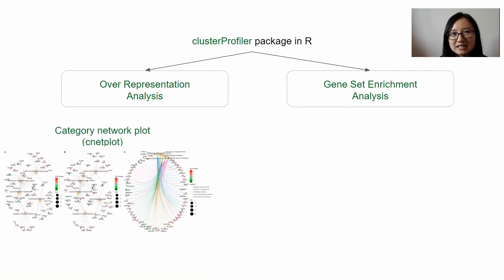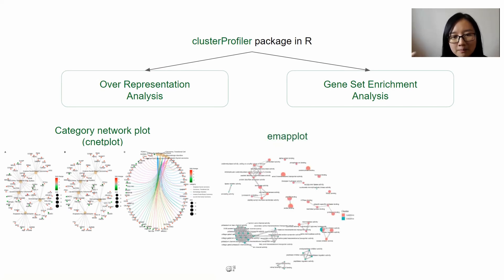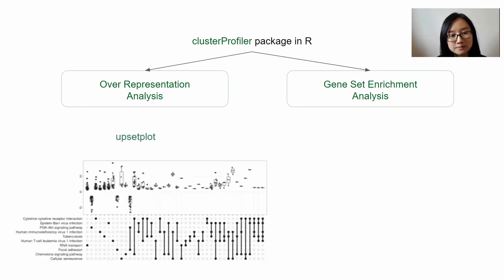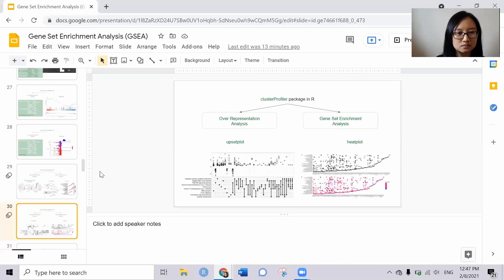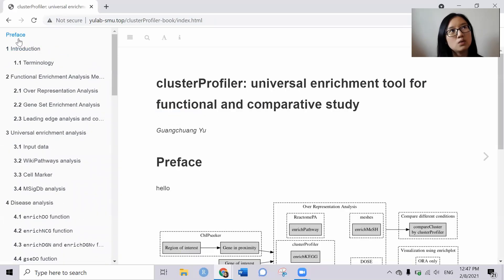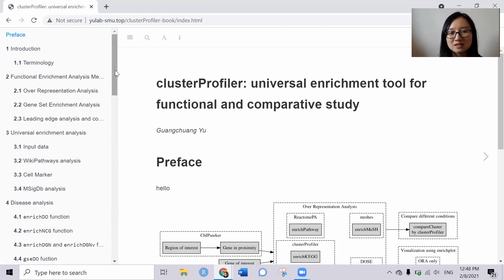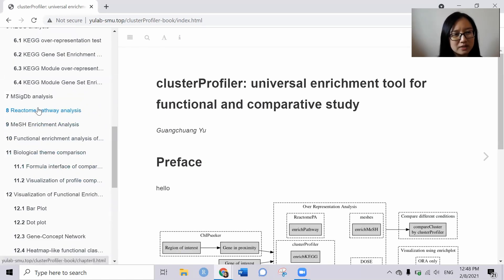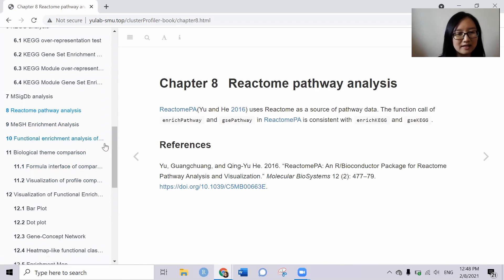You can also visualize results in other ways — like a category network plot, an emap plot to see interactions among the gene list, dot plot, upset plot, and heat plot. All these will be demonstrated in the tutorial book, which has a very user-friendly step-by-step tutorial on how to use clusterProfiler for enrichment analysis. This is also why I don't really showcase it in RStudio — I think you could follow their tutorial book easily.